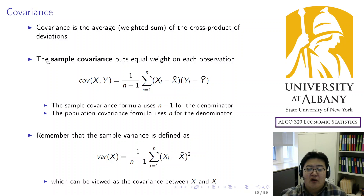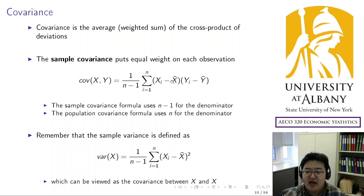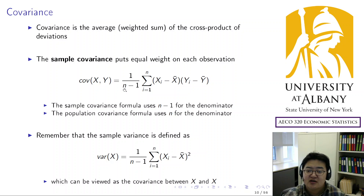Covariance is the average of the cross products of deviations. Just as we defined sample variance and population variance formulas in Chapter 4, we can define sample covariance and population covariance. The sample covariance formula takes the deviation of x times the deviation of y, sums them, and divides by n minus 1 — similar to how sample variance uses n minus 1 to be unbiased.